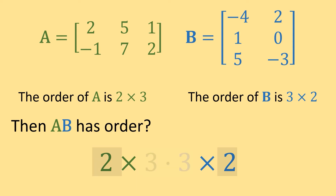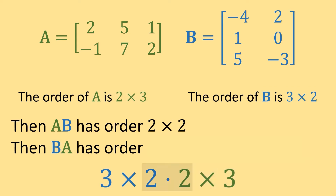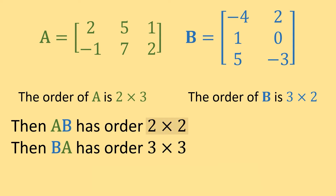The resulting matrix has the order of the outside numbers, so matrix A times matrix B is going to be a 2 by 2 matrix. Similarly, matrix B times matrix A would be 3 by 2 times 2 by 3, giving a 3 by 3 result. Since AB has order 2 by 2 and BA has order 3 by 3, it's fairly obvious that AB won't equal BA since the results are not the same size.